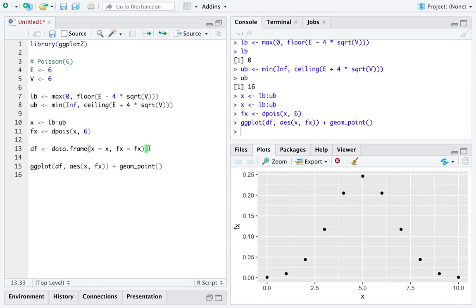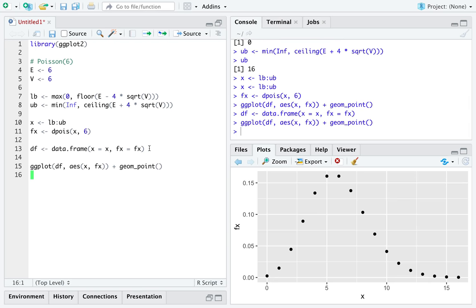And I see now that I did not create my data frame appropriately. There is a reasonable plot of the density function for a Poisson distribution with parameter equals to 6.